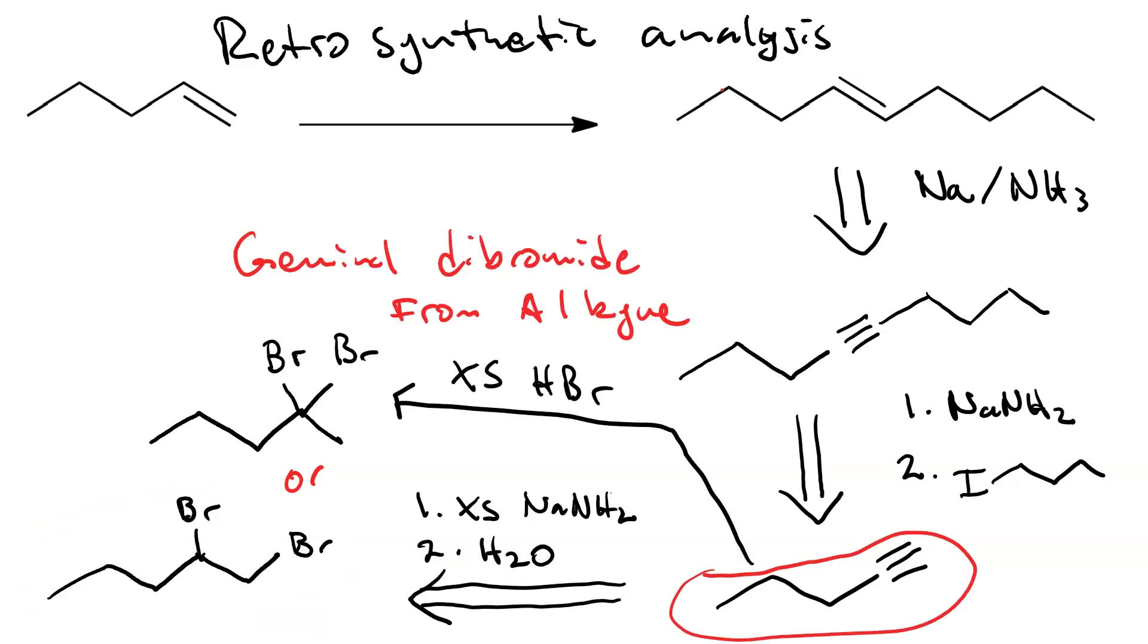To make the geminal dibromide we would need to first have an alkyne. So if we treat our alkyne with excess HBr, we get the geminal dibromide. This would not be an efficient synthesis for us because we would still have to make the alkyne. That means we're going to go through the vicinal dihalide.